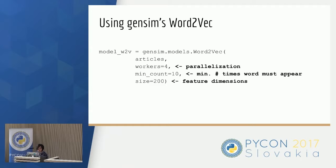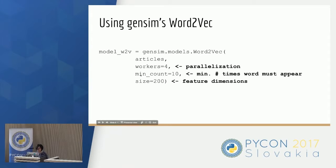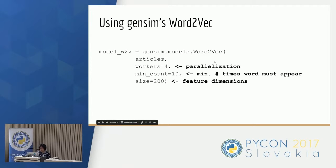We decided to use Gensim's implementation of Word2Vec. You can create a model fairly simply by invoking the Word2Vec class and passing in the articles you're interested in analyzing, which is basically a list of lists of words. You can specify things like the feature dimensions and the minimum number of times a word should appear in your corpus to be included in the model. The min count limits your vocabulary size, and the feature dimensions specify the size of a word vector. You can also specify parameters for parallelization.